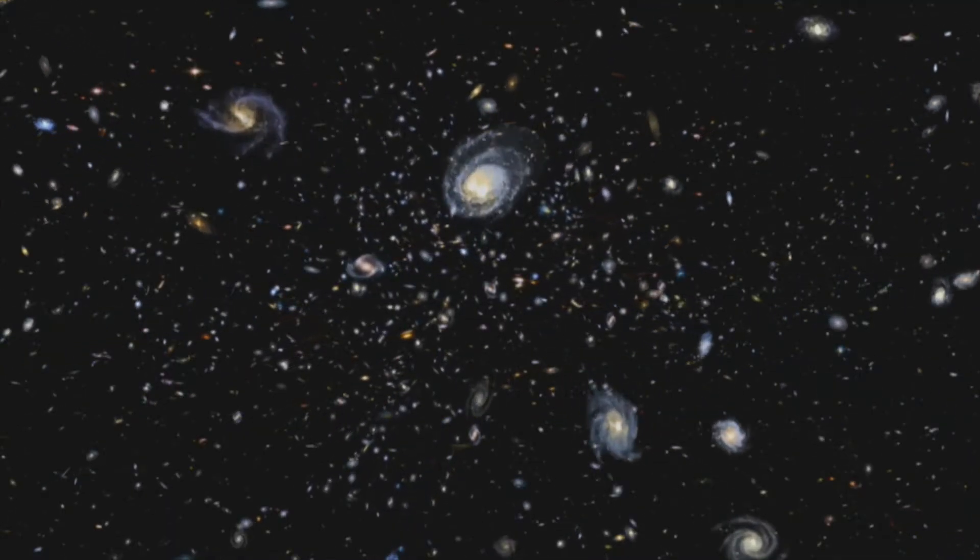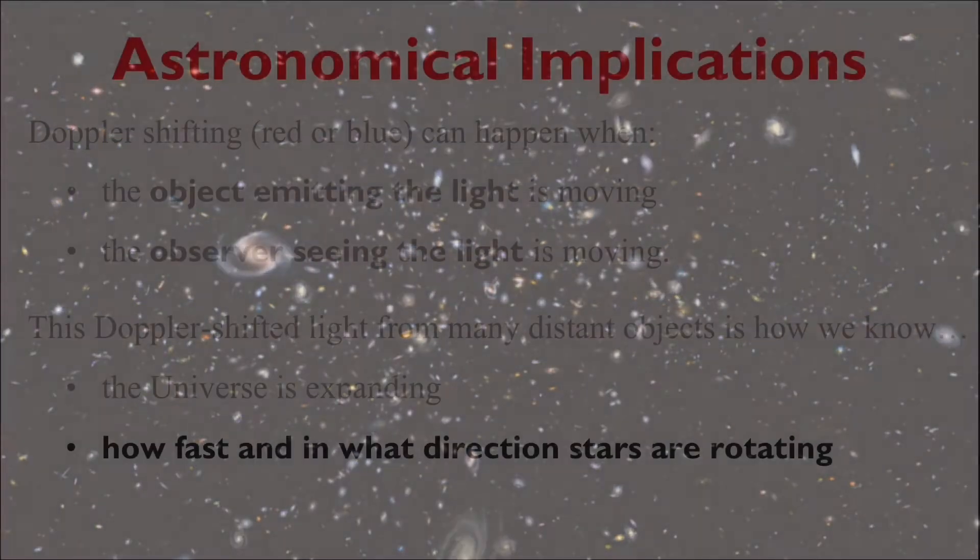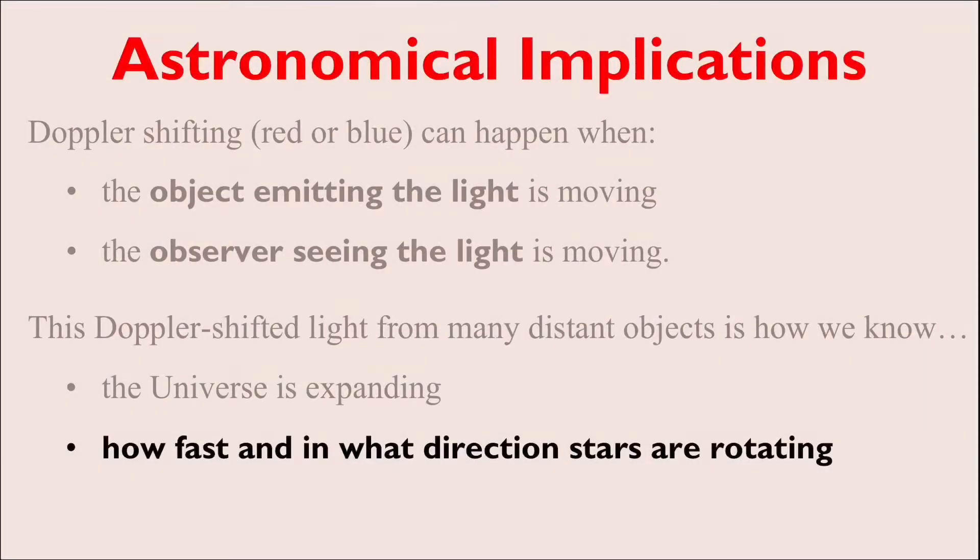Or, we can use this Doppler-shifted light from these distant objects to determine how fast stars are rotating and in what direction. Take, for example, this star.